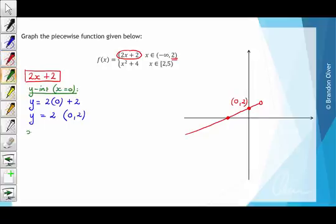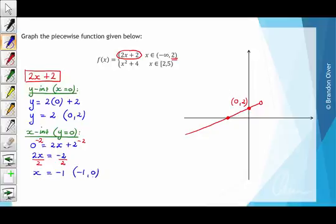Now our x-intercept is going to be found when we let y equal 0, so when we do that we have 0 is equal to 2x plus 2. If we subtract 2 from both sides of the equation, we'll find that 2x is equal to negative 2, and finally if we divide by 2 for both sides, we get x is equal to negative 1, which gives the point negative 1, 0. So we can put that on the graph over here, and that is the coordinate of the x-intercept.